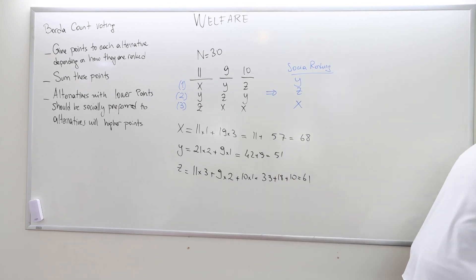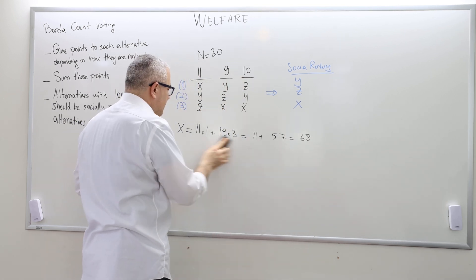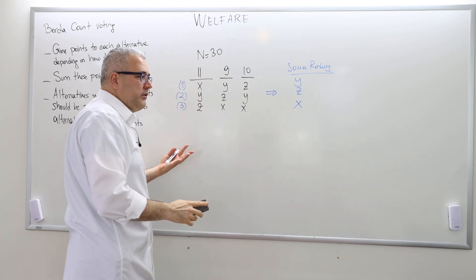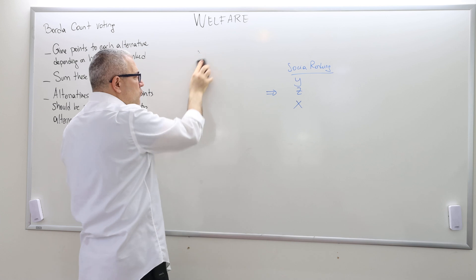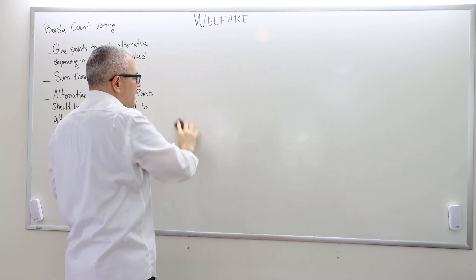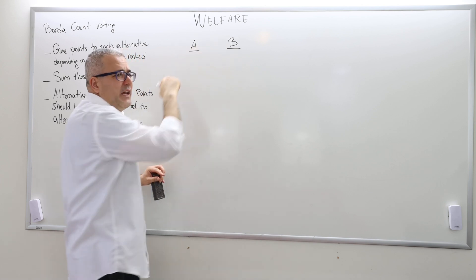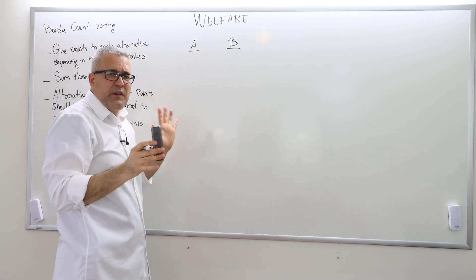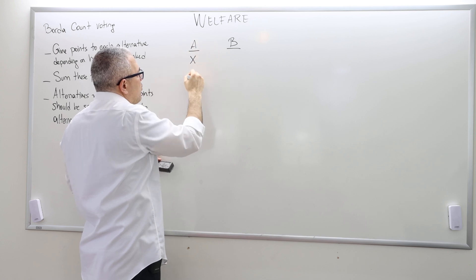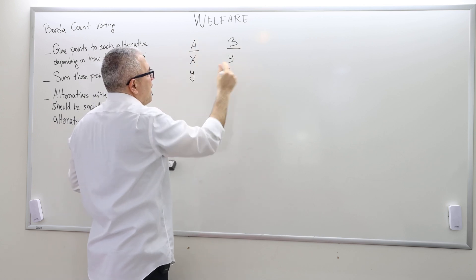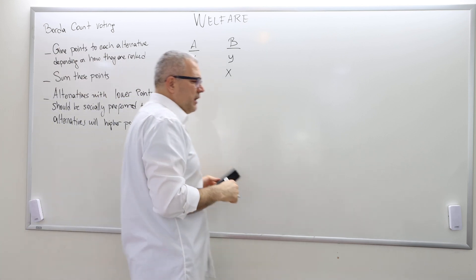The problem with Borda is that excluding or including an irrelevant alternative can actually change the ranking of the other alternatives. Let me give another example to illustrate. Say we have two alternatives X and Y, and two agents — agent A and agent B. Agent A thinks X is better than Y; agent B thinks Y is better than X.